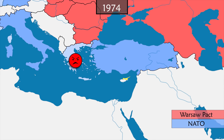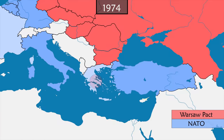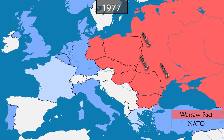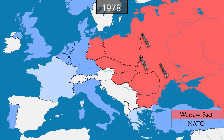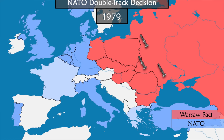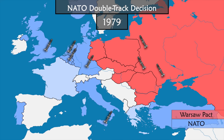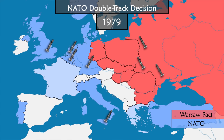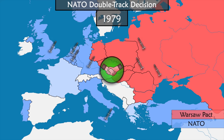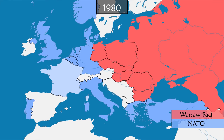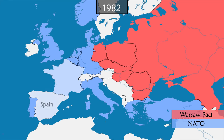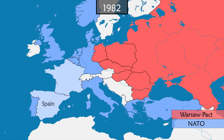In 1974, after an attempted coup in Cyprus, Turkey invades the north of the island militarily. Greece, unhappy, also leaves NATO's integrated command. In the following years, the USSR develops and installs new, more powerful nuclear missiles that threaten Western Europe more directly, rekindling tensions. In reaction, NATO decides to install new missiles in five member countries while attempting a policy of détente with the USSR. In 1980, Greece returns to the integrated command, and in 1982 Spain is admitted to NATO following the death of Francisco Franco in 1975.